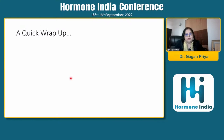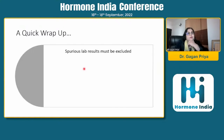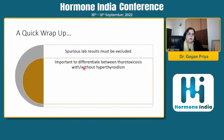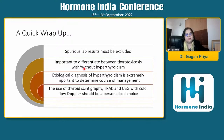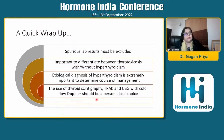To wrap up: spurious lab results must be excluded before investigating further, and results must be correlated with the clinical picture. It is very important to differentiate thyrotoxicosis with or without hyperthyroidism, as etiological diagnosis determines the course of management. For most patients, once thyroiditis is ruled out, differentiation can be made using either technetium scintigraphy or TSH receptor antibody with ultrasound and color flow Doppler — but this should be a personalized choice depending on availability of investigations and the clinical picture of the patient.